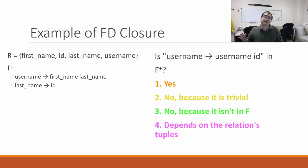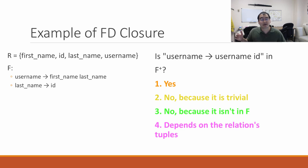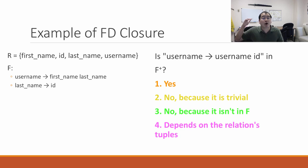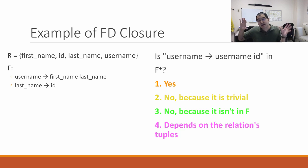Does this ever depend on the relation's tuples? No. The rule is: if you have the same username, you have the same first name and last name; and if you have the same last name, you have the same ID. Then it will always be true that if you have the same username, you will have the same username and ID. That is a fundamental property of how functional dependencies work.